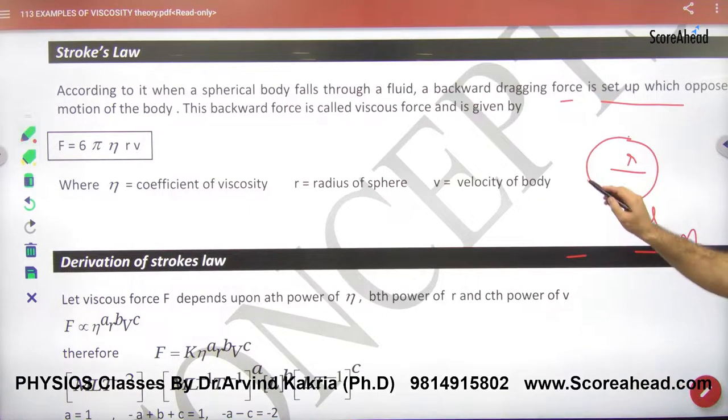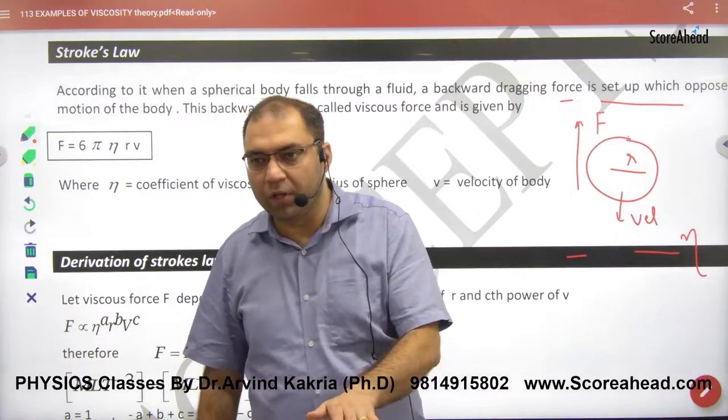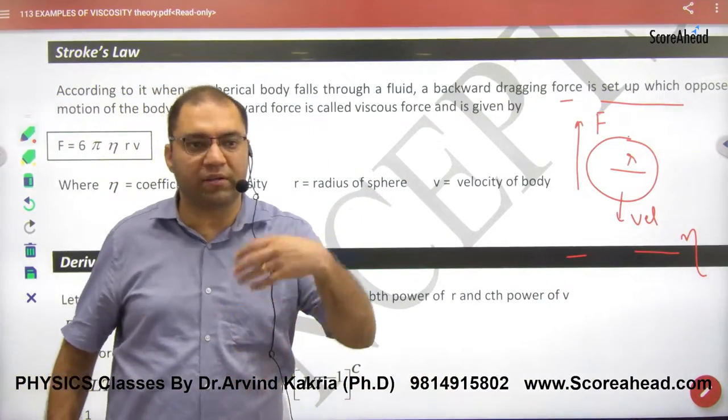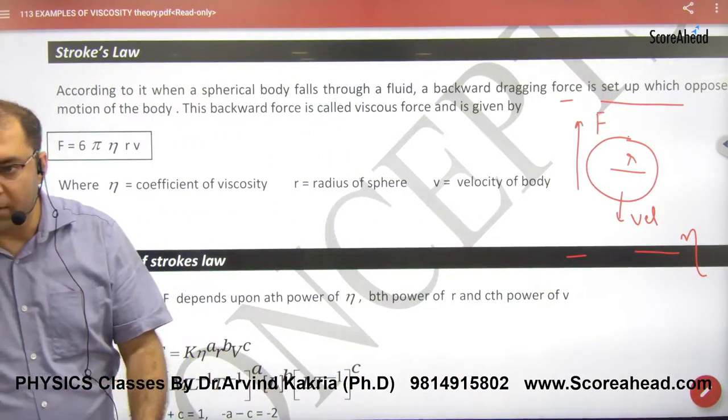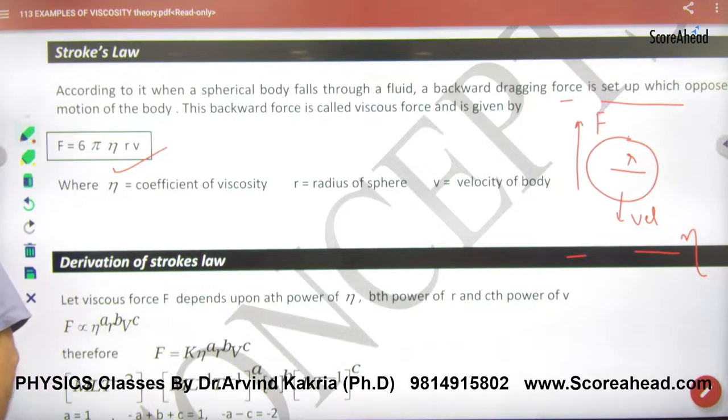تو یہ liquid اس کو force of friction لگائے گا. Force of friction کو viscous force بولتے ہیں یا viscous drag بھی بولتے ہیں. Viscous drag یا viscous force ایک ہی بات ہے. جو liquid اس کے اوپر viscous drag یا viscous force لگائے گا according to Stroke's law اس کا فارمولا ہوگا 6πηrv.